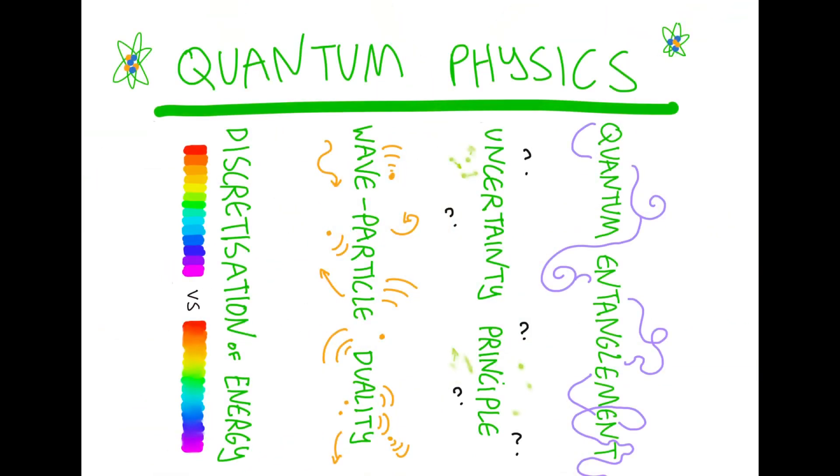Quantum physics describes the world on a scale smaller than an atom. The four pillars of quantum mechanics are the discretisation of energy, wave-particle duality, the uncertainty principle, and quantum entanglement.